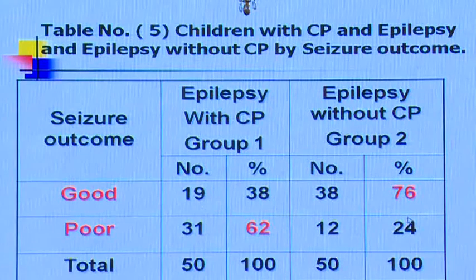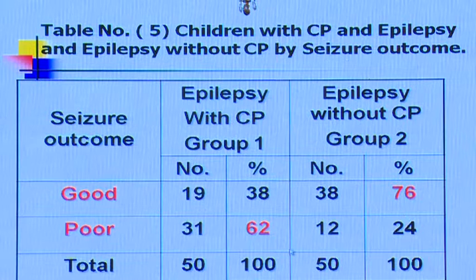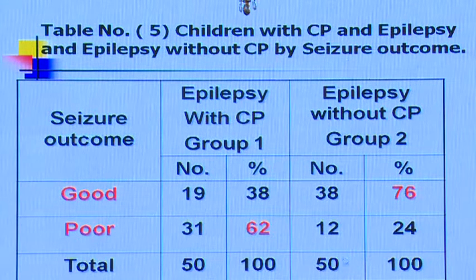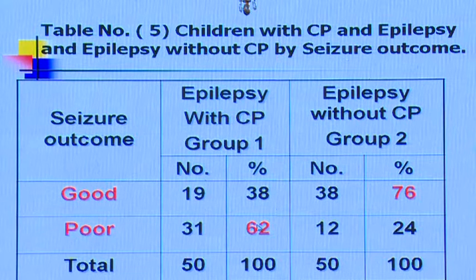Regarding outcomes: children with CP and epilepsy have a much poorer outcome compared to children with epilepsy without CP. In this study, children without CP had a good outcome in 76% of patients. Compared to that, only 24% of CP patients had a good outcome, and 62% of patients with CP had a poor outcome as regards their epilepsy.